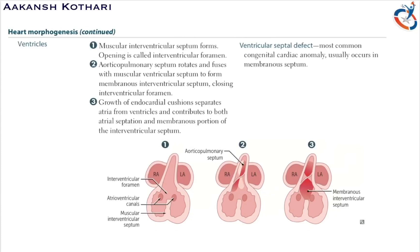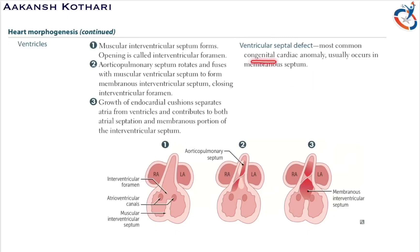The endocardial cushion plays an important role in atrial septation and also a vital role in the ventricular septum — it forms the membranous portion of the interventricular septum and helps in atrial septation. Regarding ventricular septal defect, also called VSD, these are the most common congenital cardiac anomaly. VSD usually occurs in the membranous interventricular septum — when there is a defect in formation of the membranous interventricular septum, there is ventricular septal defect.